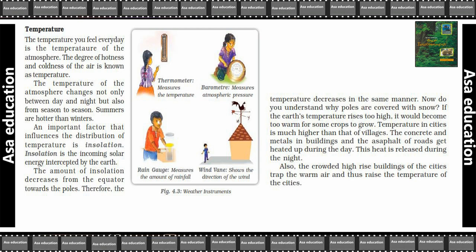If the earth's temperature rises too high, it would become too warm for some crops to grow. Temperature in cities is much higher than that of villages. The concrete and metal in buildings and the asphalt of roads gets heated up during the day; this heat is released during the night. Also, the crowded high-rise buildings of cities trap the warm air and thus raise the temperature of the city.